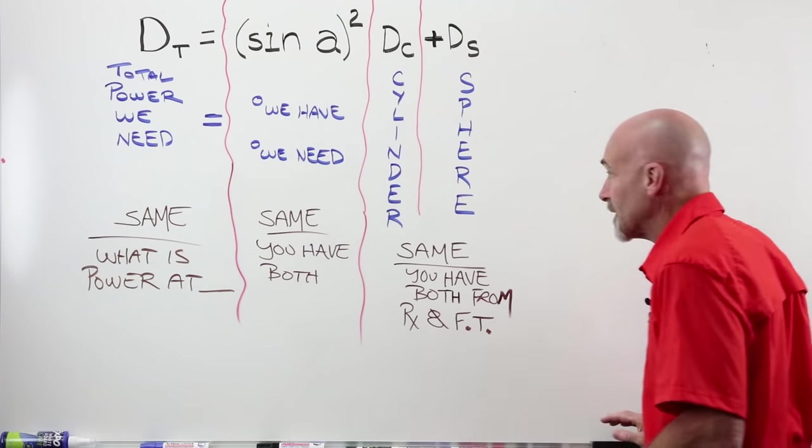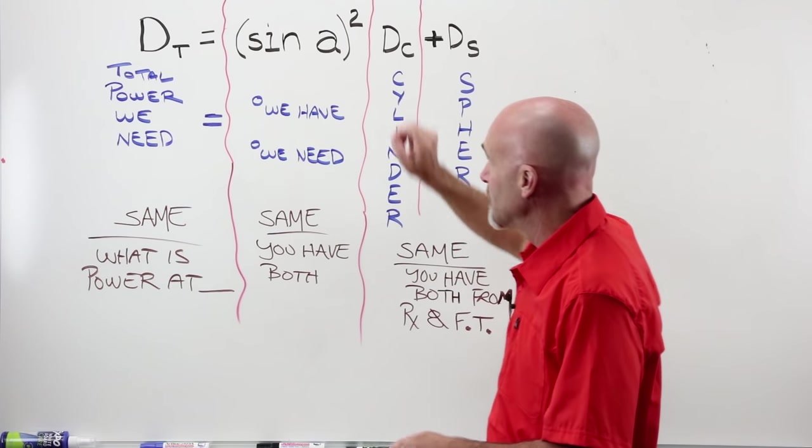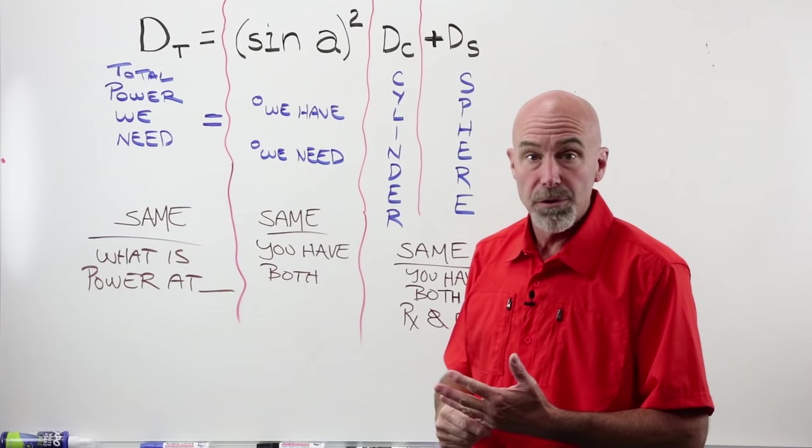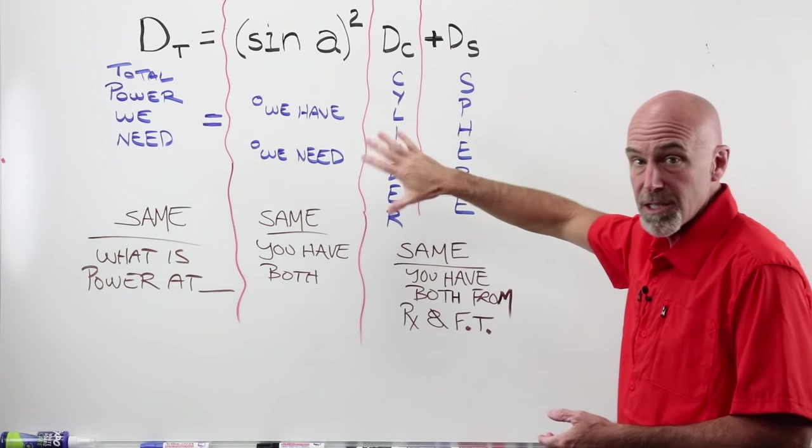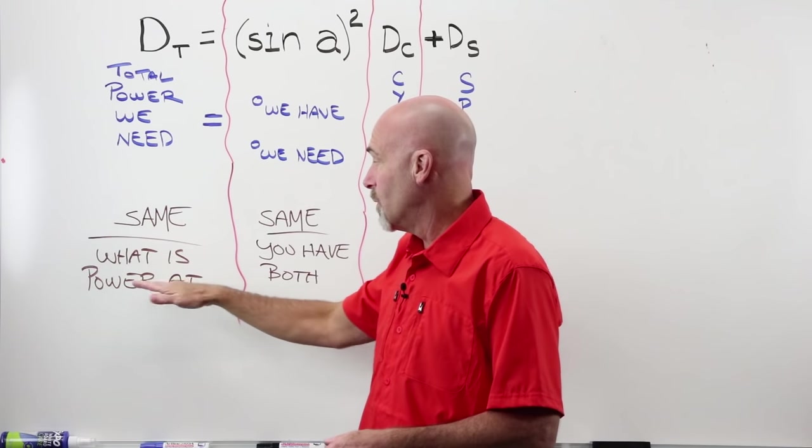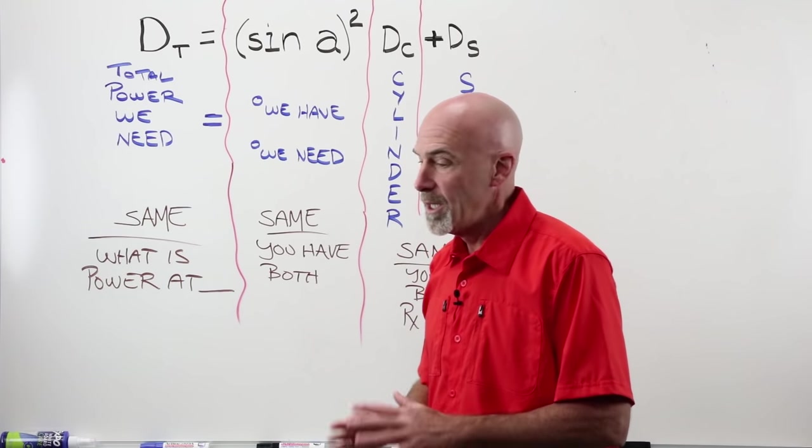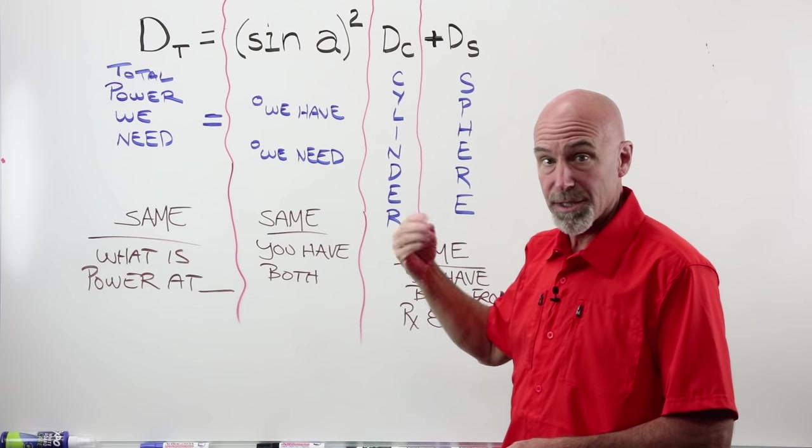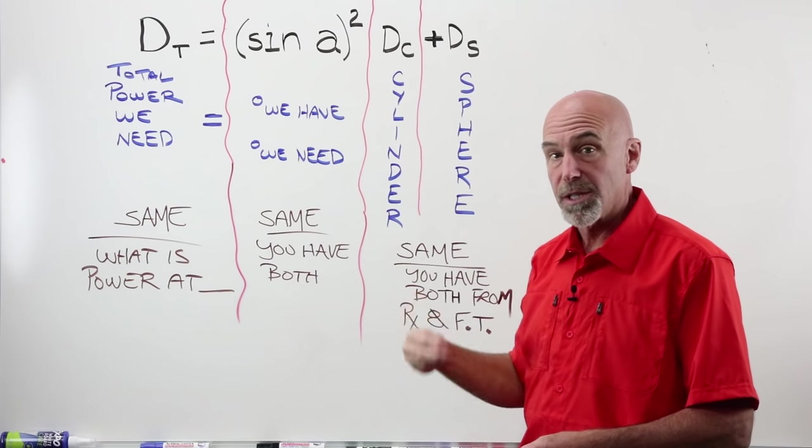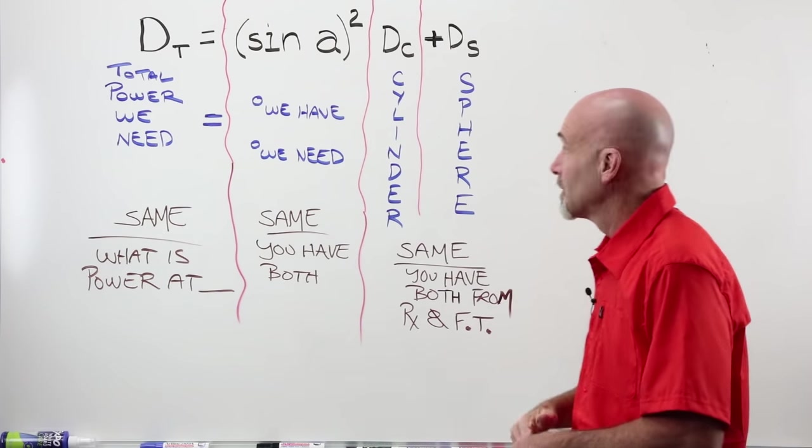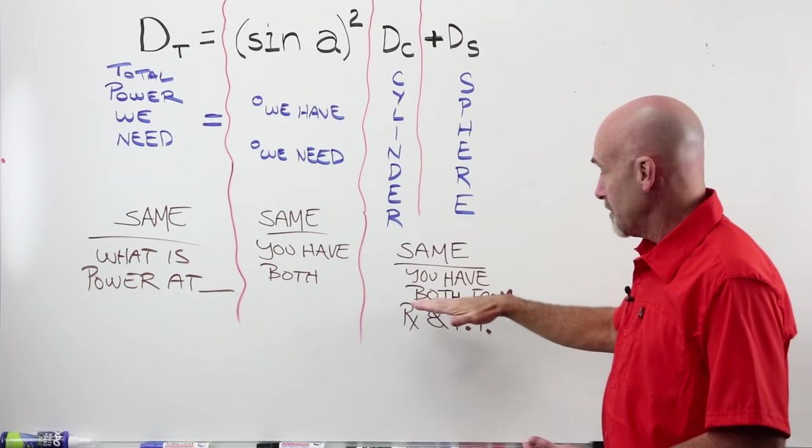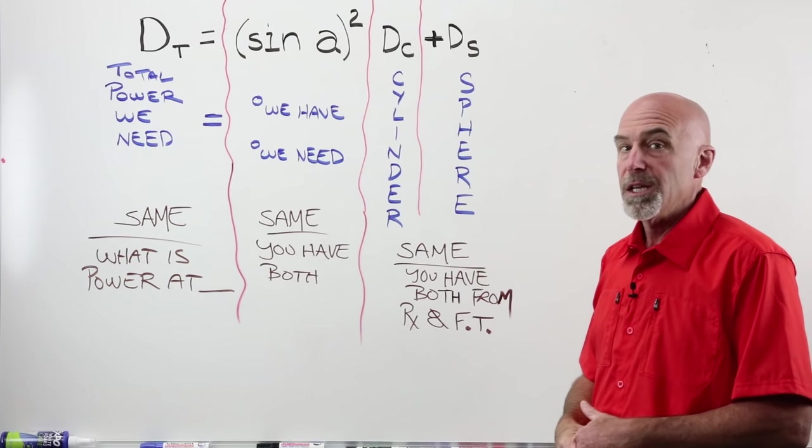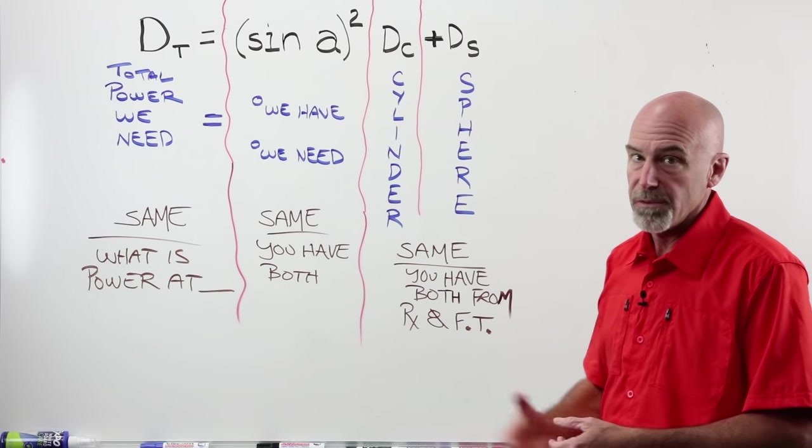One of the reasons that I say that is because although this looks fancy and it's a formula and we're going to use a scientific calculator to solve for the missing power, there's nothing new here. If you can work 30, 45, 60, this is the exact same question. The total power is what is that power at whatever question that we're trying to solve for. Nothing new. Exactly the same. The sine of A squared is just another way of saying the degree that we actually have versus what is the degree that we actually need in order to solve a problem. Same thing. Dc, cylinder value. Same. You have both from your prescription and from flat transposition. S, sphere. Sphere power from your prescription. Nothing new. Same parts, same pieces, same puzzle. We're just going to solve it in a slightly different way.